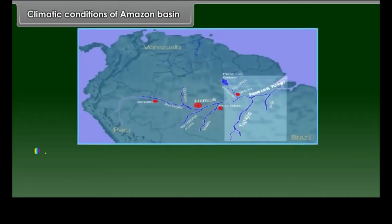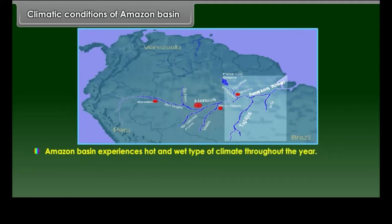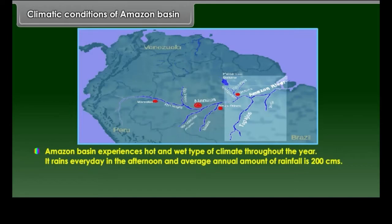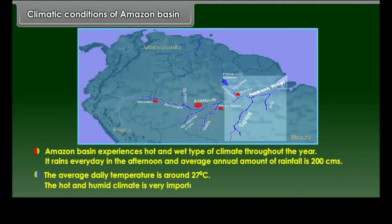The Amazon Basin experiences hot and wet type of climate throughout the year. It rains every day in the afternoon and the average annual amount of rainfall is 200 cm. The average daily temperature is around 27 degrees Celsius. The hot and humid climate is a very important factor for the dense growth of vegetation.